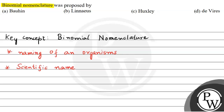It is called binomial because every scientific name has two words present. The first word is the name of the genus to which the organism belongs, and the second word is the name of the species. The genus name's first letter is always written in capital, and the species name's first letter is always in small. If typed, the name appears in italics; if handwritten, genus and species are underlined separately.